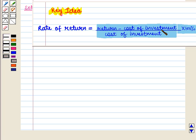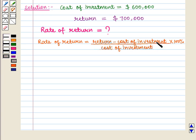From the key idea we know that rate of return is given by return minus cost of investment whole upon cost of investment into 100%.